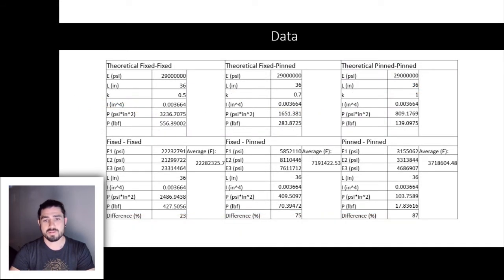Theoretically, the calculated critical axis load for the specimens under each boundary condition was 556 force pounds for specimens fixed at both ends, 284 force pounds for the specimens that had one end fixed and one end pinned, and 139 force pounds for the specimens that were pinned at both ends.